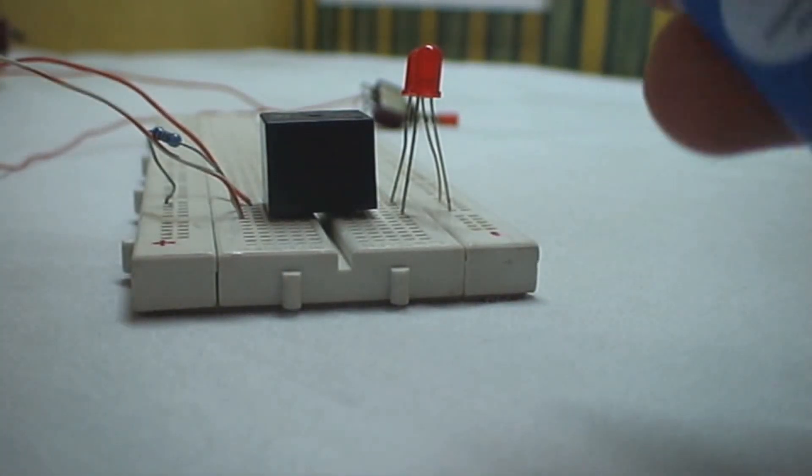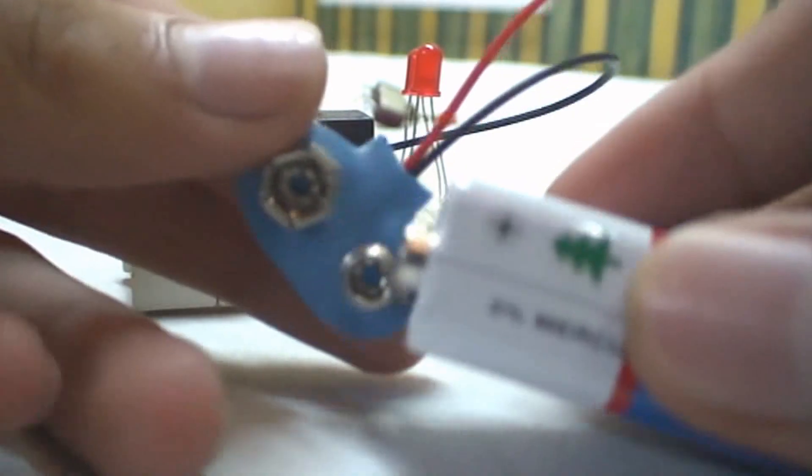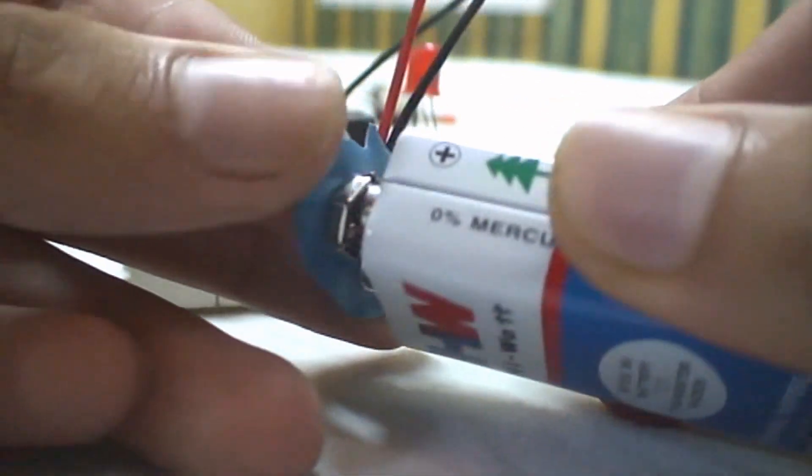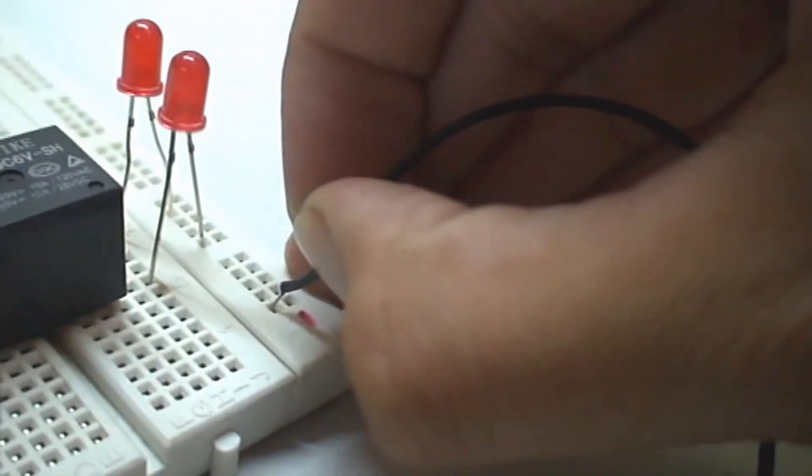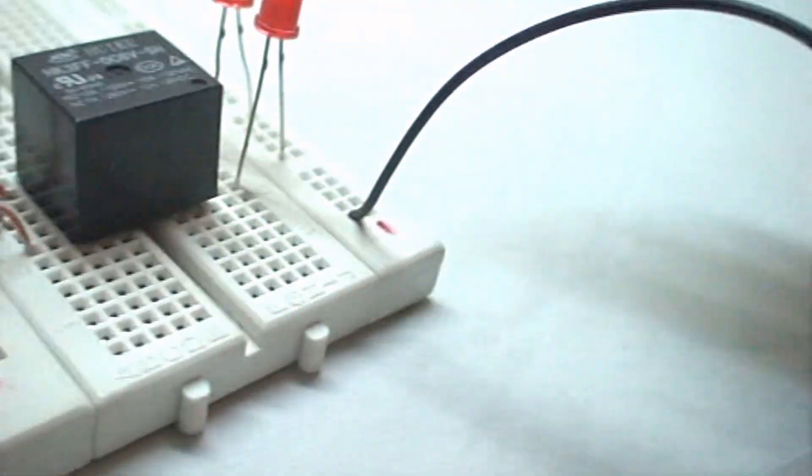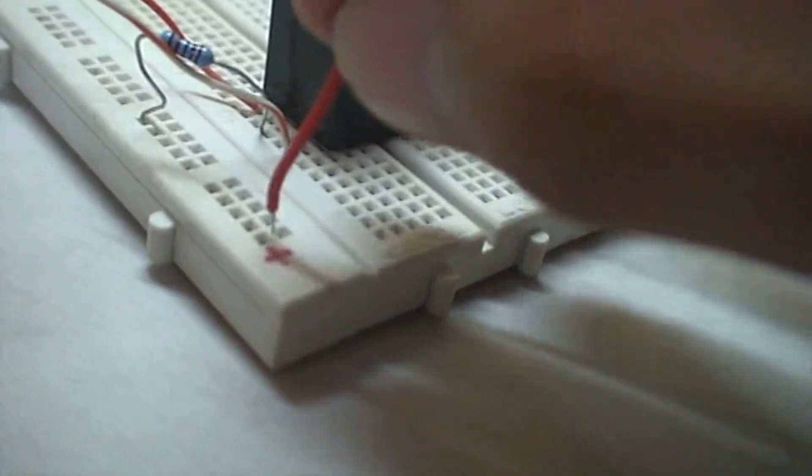Now we connect the 9V battery to the 9V battery clip. We connect the negative terminal of the battery clip to the negative rail of the breadboard, and the positive terminal to the positive rail.